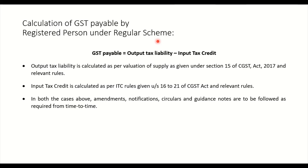Regular scheme means we are speaking about section 22 and section 24. The formula we have been using is: GST payable is equal to output tax liability minus input tax credit — that is the GST payable through the GST e-cash ledger. Output tax liability is calculated as per section 15 of the CGST Act 2017 and relevant rules.